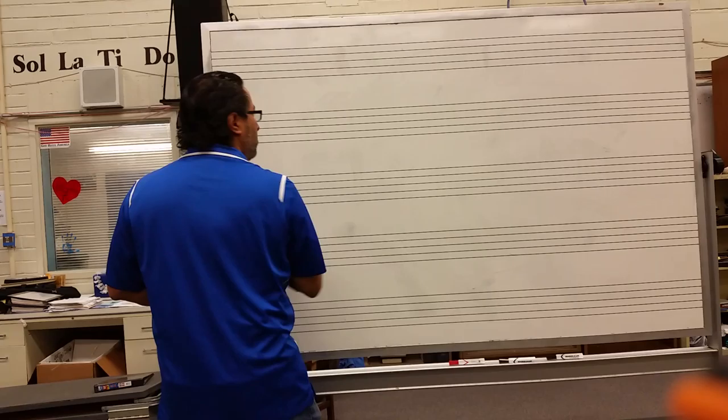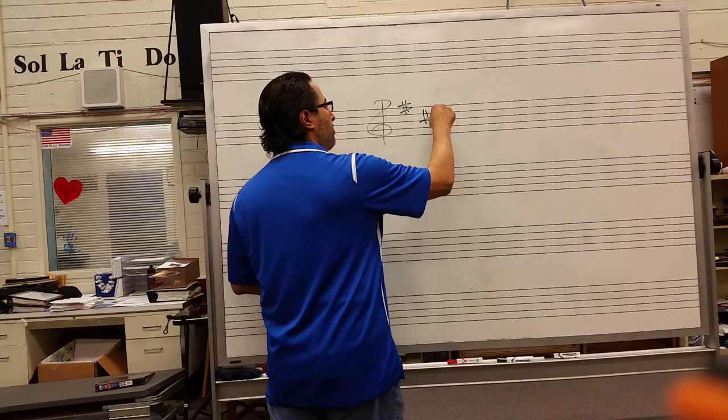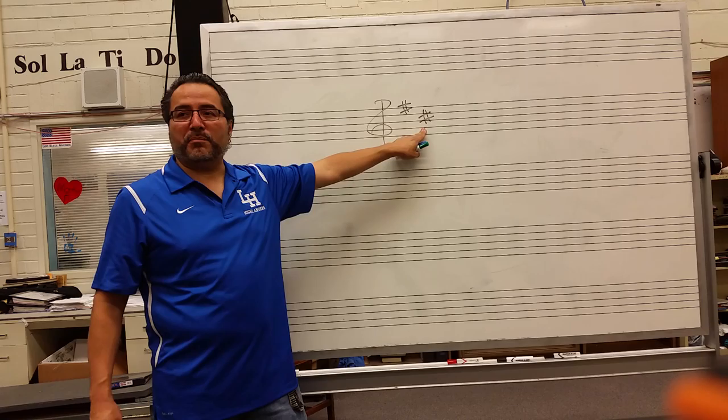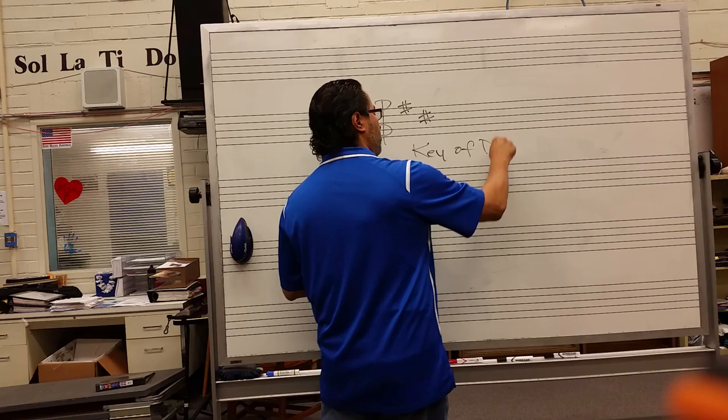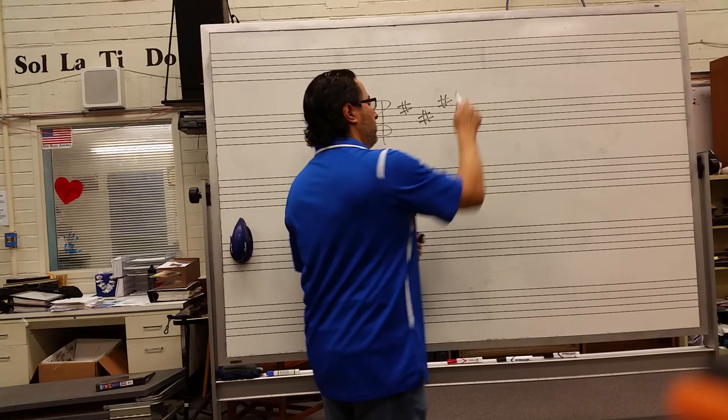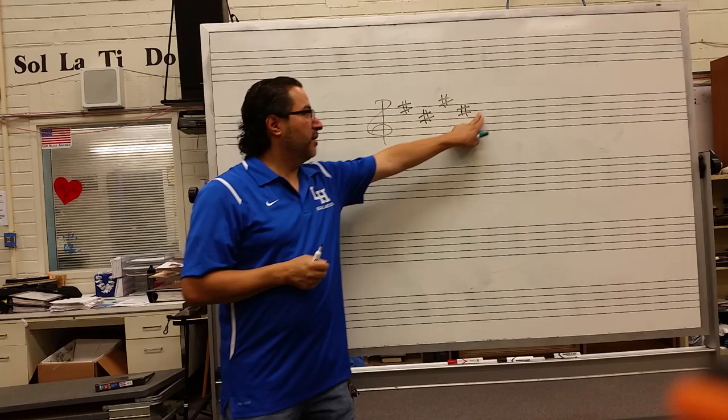Sharps are different. For sharps, you look at the last sharp in the order and then go up one half step — that gives you the key you're in. For example, if the last sharp is C sharp, a half step higher is D, so this is the key of D. And if the last sharp is D sharp, a half step higher is E, so this is the key of E. That's how sharps work.